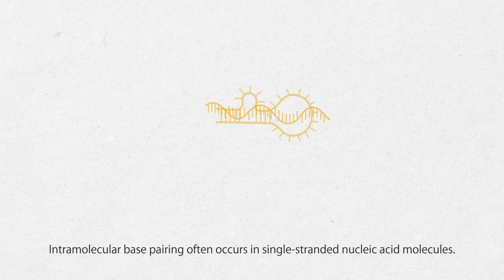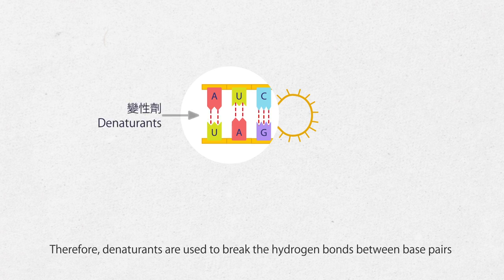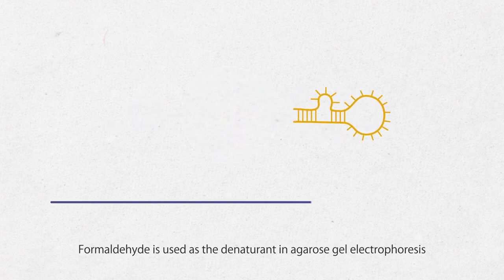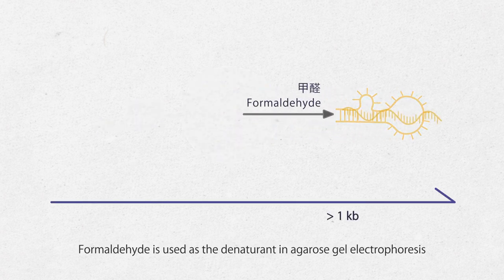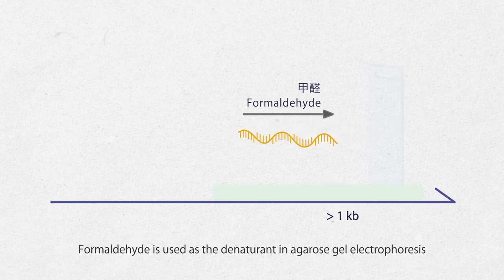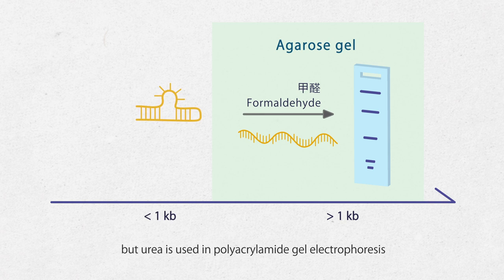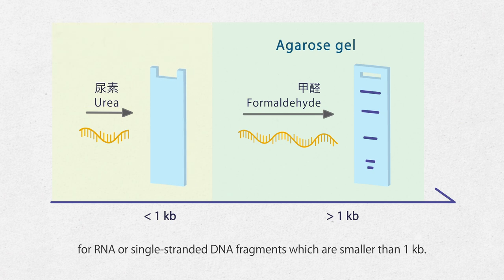Intramolecular base pairing often occurs in single-stranded nucleic acid molecules. Therefore, denaturants are used to break the hydrogen bonds between base pairs to achieve more accurate separation in gel electrophoresis. Formaldehyde is used as the denaturant in agarose gel electrophoresis for RNA fragments larger than 1,000 base pairs. Urea is used in polyacrylamide gel electrophoresis for RNA or single-stranded DNA fragments which are smaller than 1,000 base pairs.